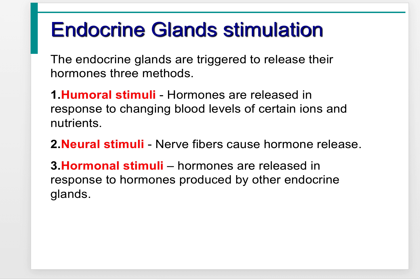There are three triggers of stimulus in the endocrine system: humoral stimuli, neural stimuli, and hormonal stimuli. Humoral stimuli occur when hormones are released in response to changing blood levels of certain ions or nutrients. For example, if the calcium level in the blood is high, it triggers certain hormones to be released to restore the balance of calcium. This applies to many different ions and particles in the blood.